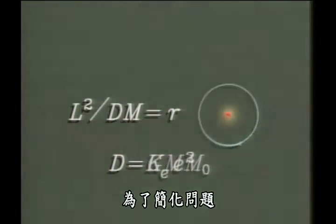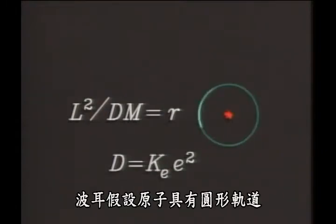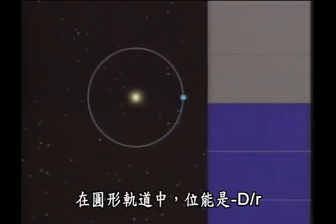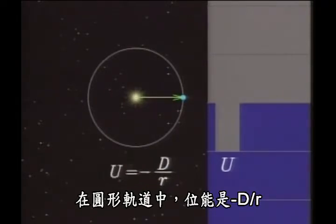To simplify matters, Niels Bohr assumed atoms would have circular orbits. In a circular orbit, the potential energy is minus D over r.